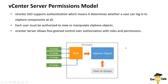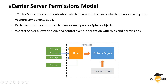As you can see in this diagram, we have vSphere objects. These vSphere objects could be your virtual machine, your ESXi host, vCenter Server, data center, cluster, or any other vSphere objects such as datastores or networking objects — all of which fall into the vSphere objects category.